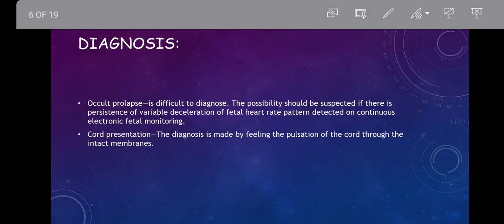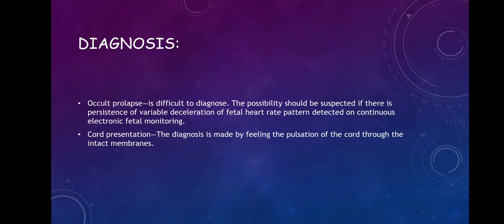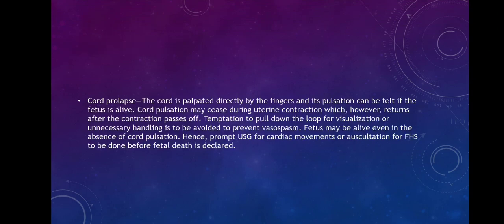Regarding diagnosis: occult prolapse is difficult to diagnose because the cord is on the side of the presenting part, making it very difficult to palpate. The possibility should be suspected if there is persistence or variable deceleration of fetal heart rate pattern detected on continuous electronic fetal monitoring. For cord presentation, the diagnosis is made by feeling the pulsation of the cord through the intact membrane. For cord prolapse, the cord is palpated directly by the fingers and its pulsation can be felt if the fetus is alive.